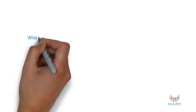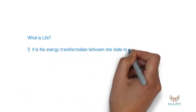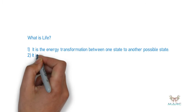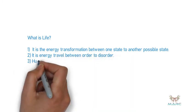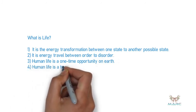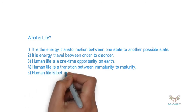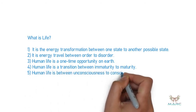So what is life? It is the energy transformation between one state to another possible state. It is travel between order to disorder. Human life is a one-time opportunity on Earth. Human life is transition between immaturity to maturity, unconsciousness to consciousness.